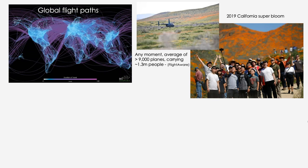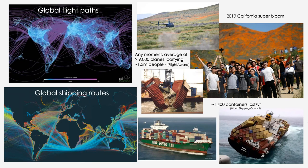If we think about global flight patterns, a lot of this movement is for tourism. FlightAware reports that at any moment there's an average of 9,000 planes in the air carrying 1.3 million people. Many of those people are visiting natural areas. At the same time, we're moving goods around the world like never before with shipping containers, and the World Shipping Council reports we're losing 1,400 containers a year.